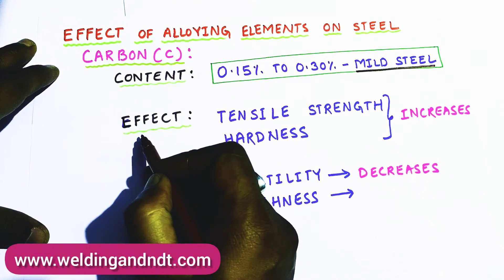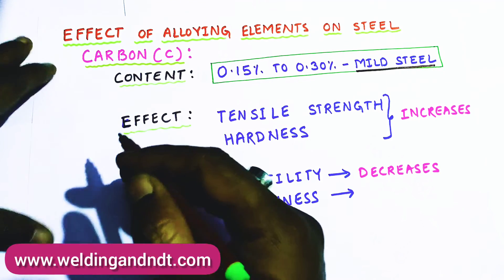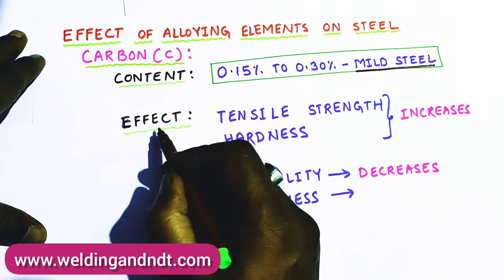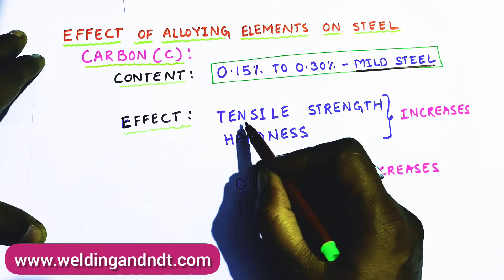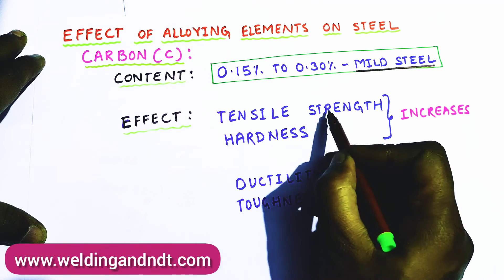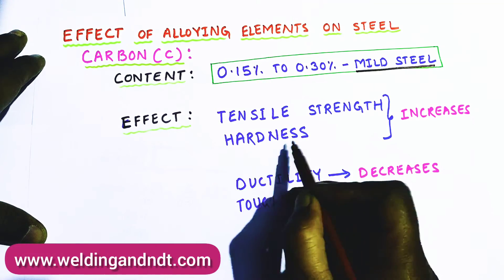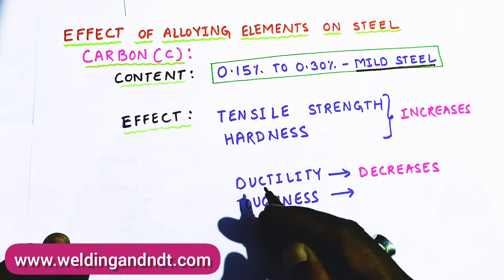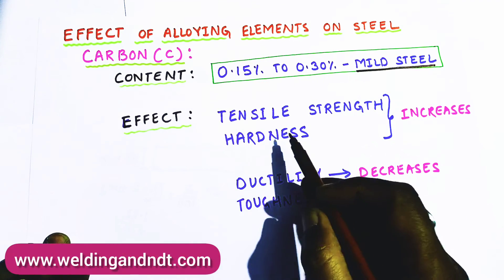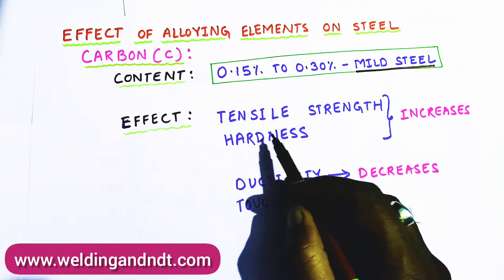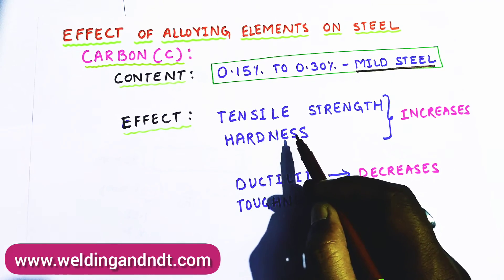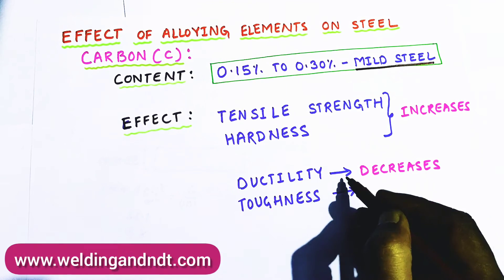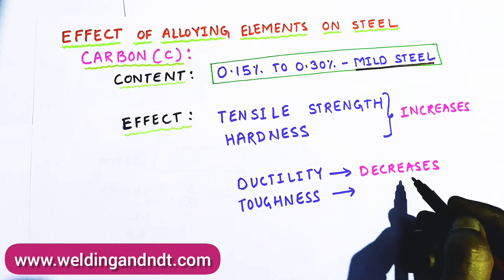Now we will understand the effect of carbon on steel. With the help of carbon we can increase the tensile strength and hardness — meaning if we increase the carbon, the tensile strength and hardness of the steel will increase, whereas the ductility will decrease.